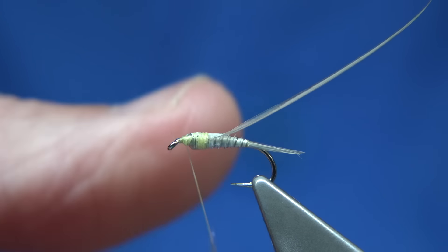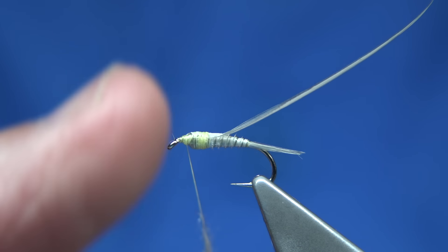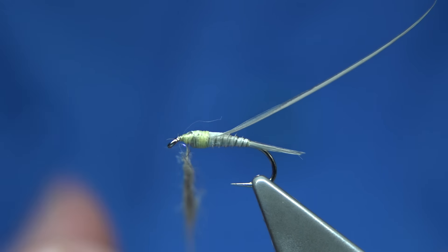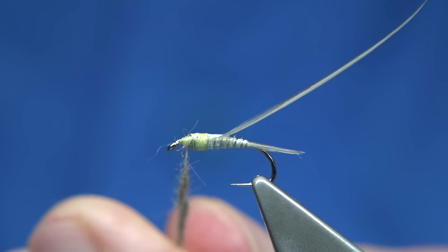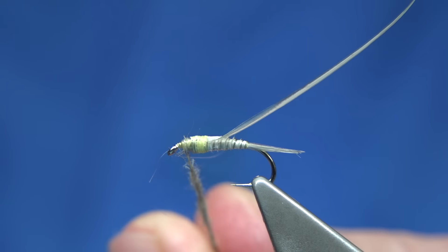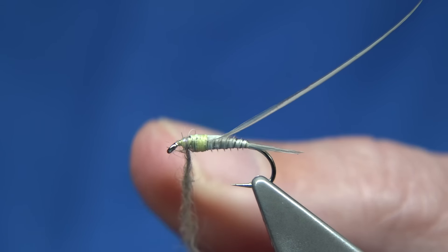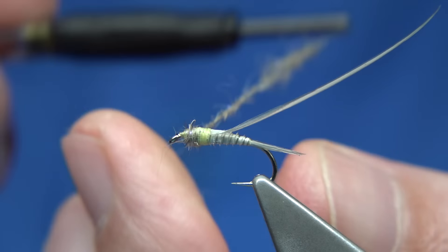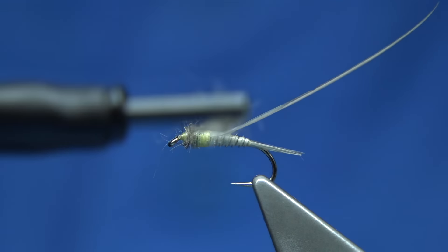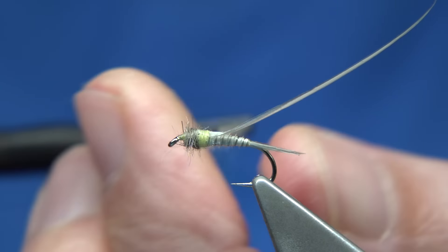I quite like it, I actually see the Cahill thread coming through. Now I like to bring the dubbing from the eye up, stretch now as I wind. As I say, I don't want it too heavy. Wind it right up.